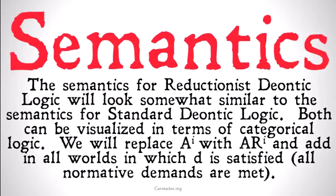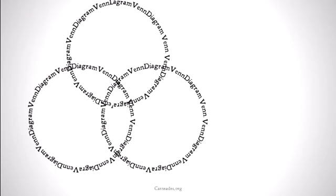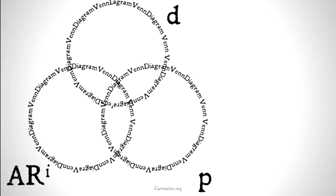That all normative demands are met — that's what it means for D to be satisfied. So it's going to look kind of like this: we have a triple Venn diagram. This circle includes all possible worlds that are accessible to I, which may be all possible worlds. This is D — all worlds where all normative demands are met. And this is P — all worlds where P is true.